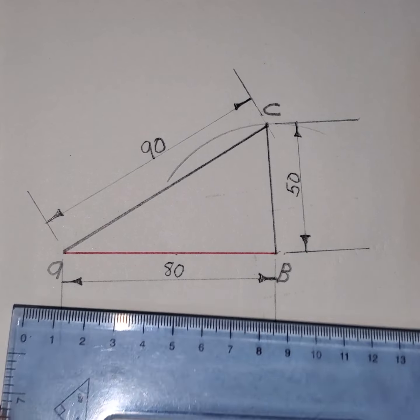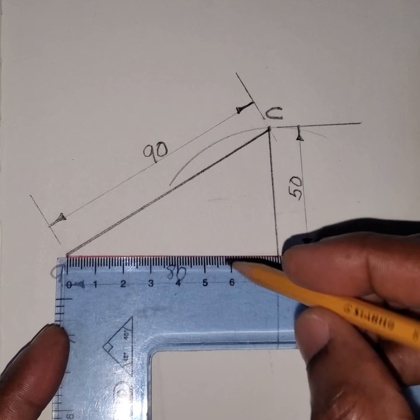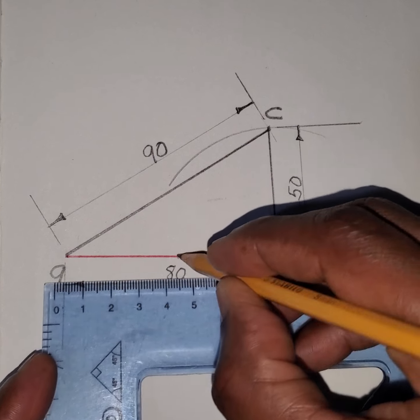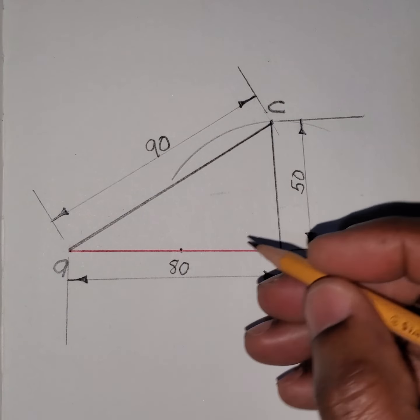So let's measure the side. This side measures 80 millimeters so the center of the side is 40 which is right here.